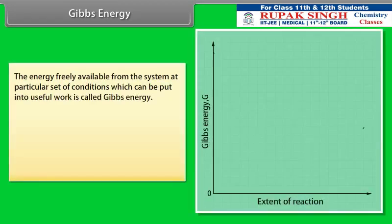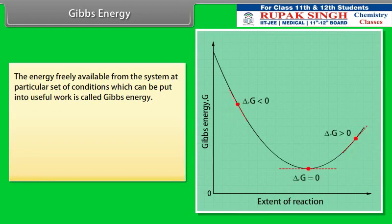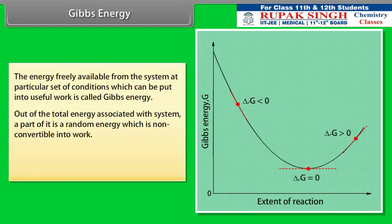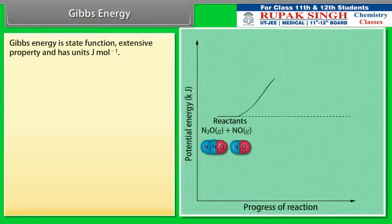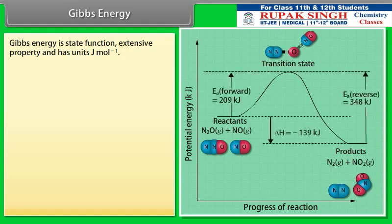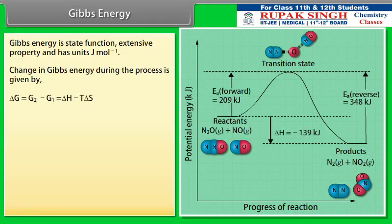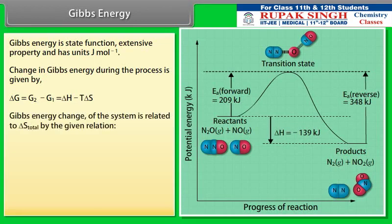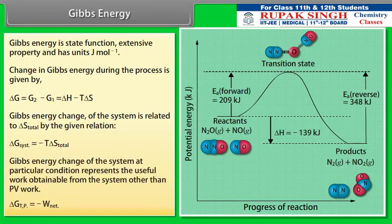The energy freely available from the system at particular conditions which can be put into useful work is called Gibbs energy. Out of the total energy associated with a system, a part is random energy which is non-convertible into work. Gibbs energy is represented as G = H − TS. It is a state function, an extensive property, and has units of joules per mole. The change in Gibbs energy is given by ΔG = G2 − G1 = ΔH − TΔS. Gibbs energy change is related to ΔS(total) by: ΔG(system) = −TΔS(total). ΔG represents the useful work obtainable from the system other than PV work.